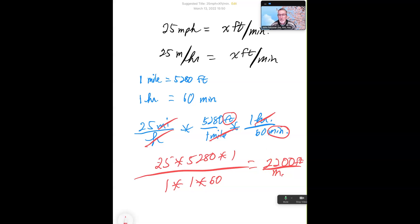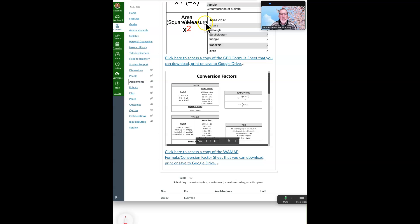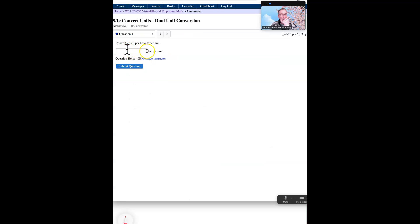And that is the answer we would put in at Canvas. And they have the units here, feet per minute. So you only need to put in the number that you got on the calculator. 2200. Submit question. See how we did.